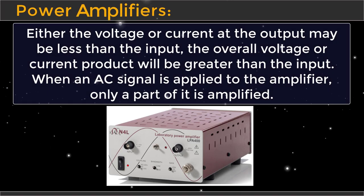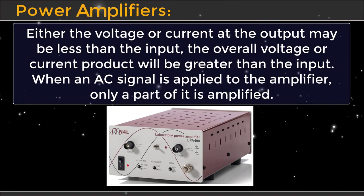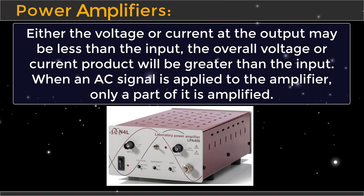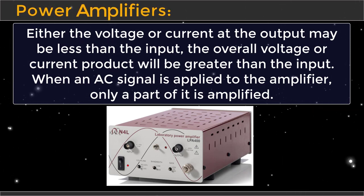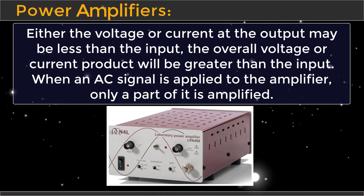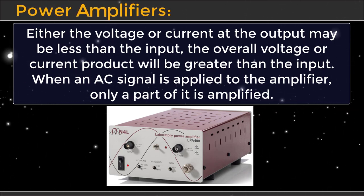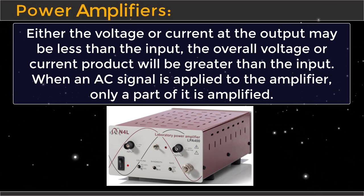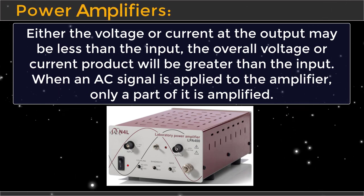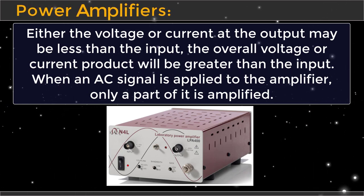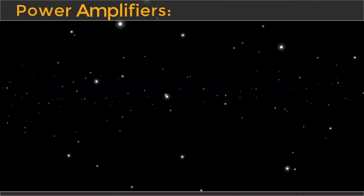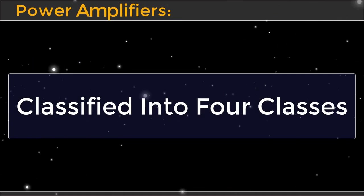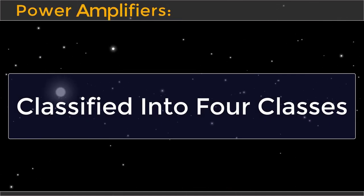Either the voltage or current at the output may be less than the input, but the overall voltage or current product will be greater than the input. When an AC signal is applied to the amplifier, only a part of it is amplified. Depending on the portion of the wave amplified, these are classified into four classes.